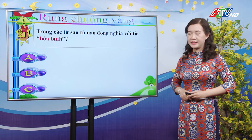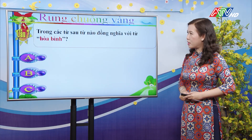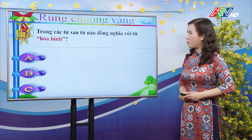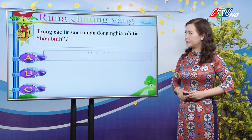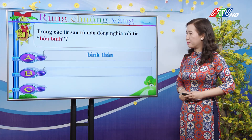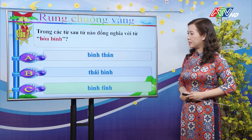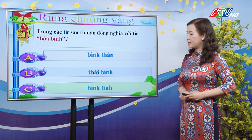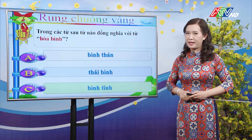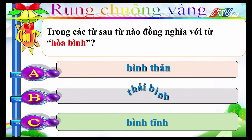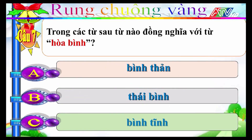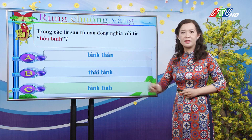Câu 7: Trong các từ sau, từ nào đồng nghĩa với từ "hòa bình"? A-Bình thẳng; B-Thái bình; C-Bình tĩnh. Đáp án đúng là B: từ "thái bình" là từ đồng nghĩa với từ "hòa bình".